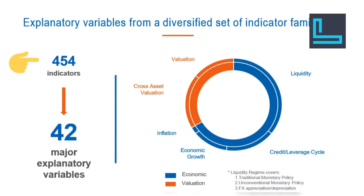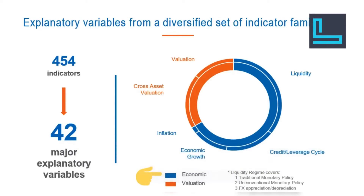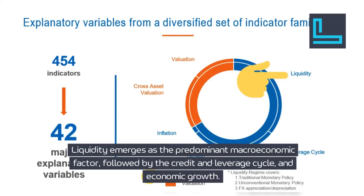We commenced with 450 indicators, each with over 50 years of historical data. These indicators include absolute valuations of asset classes, cross-asset relative valuations, and macroeconomic variables categorized into four families: inflation-related variables, economic growth-related variables, credit or leverage cycle-related variables, and liquidity-related variables, encompassing both traditional and unconventional monetary policy as well as FX appreciation or depreciation. The initial findings indicate that the macroeconomic cycle explains two-thirds of financial regimes and valuations account for one-third. Liquidity emerges as the predominant macroeconomic factor, followed by the credit and leverage cycle and economic growth.